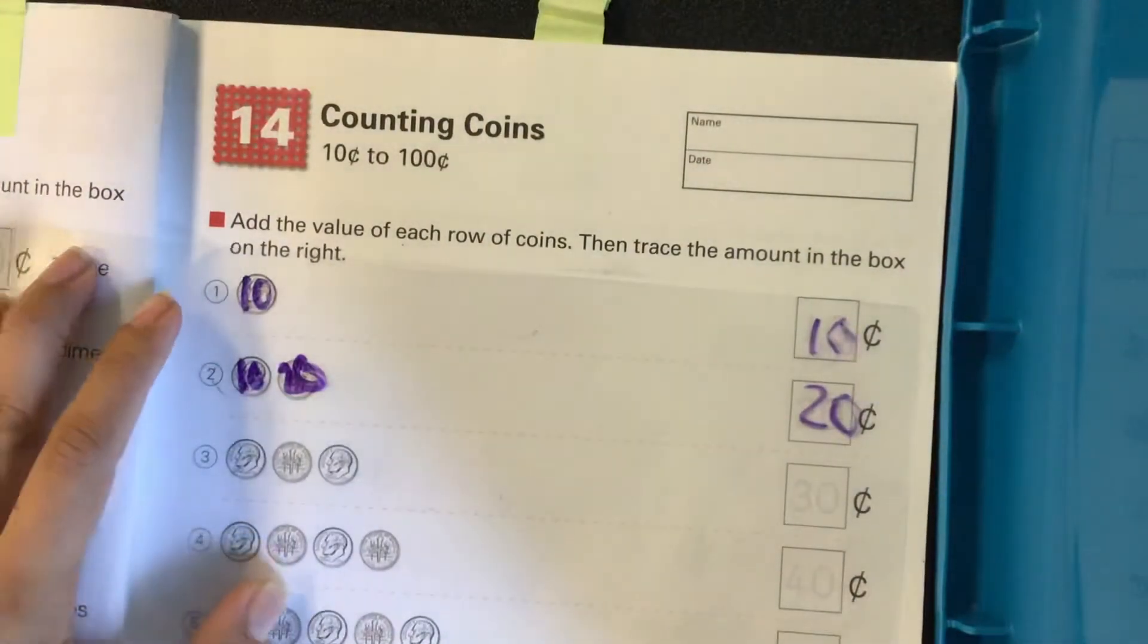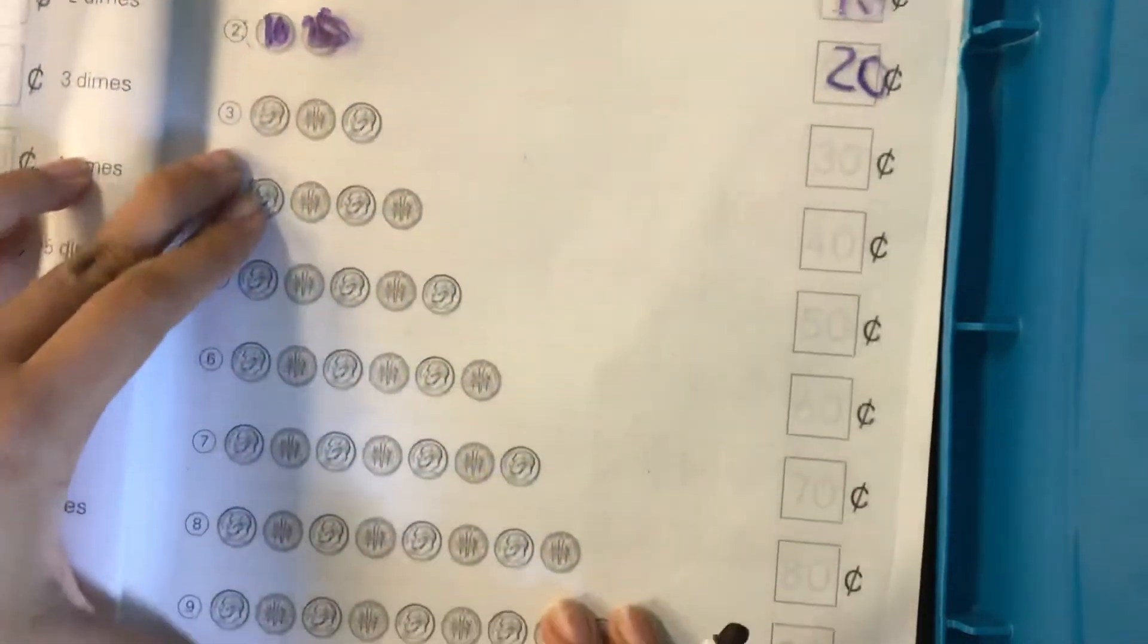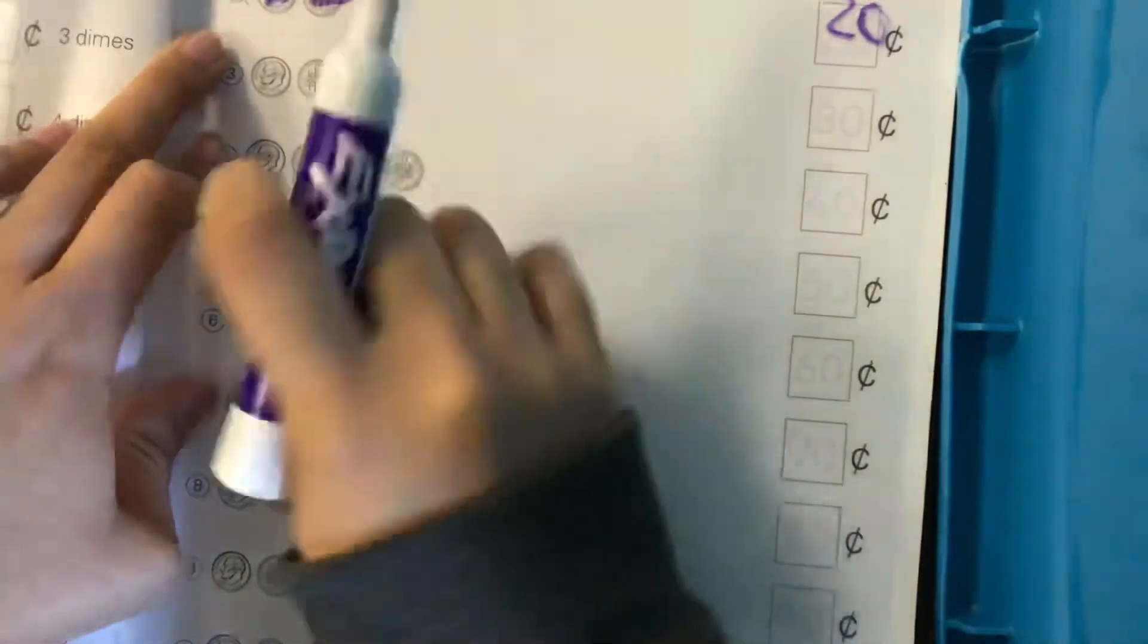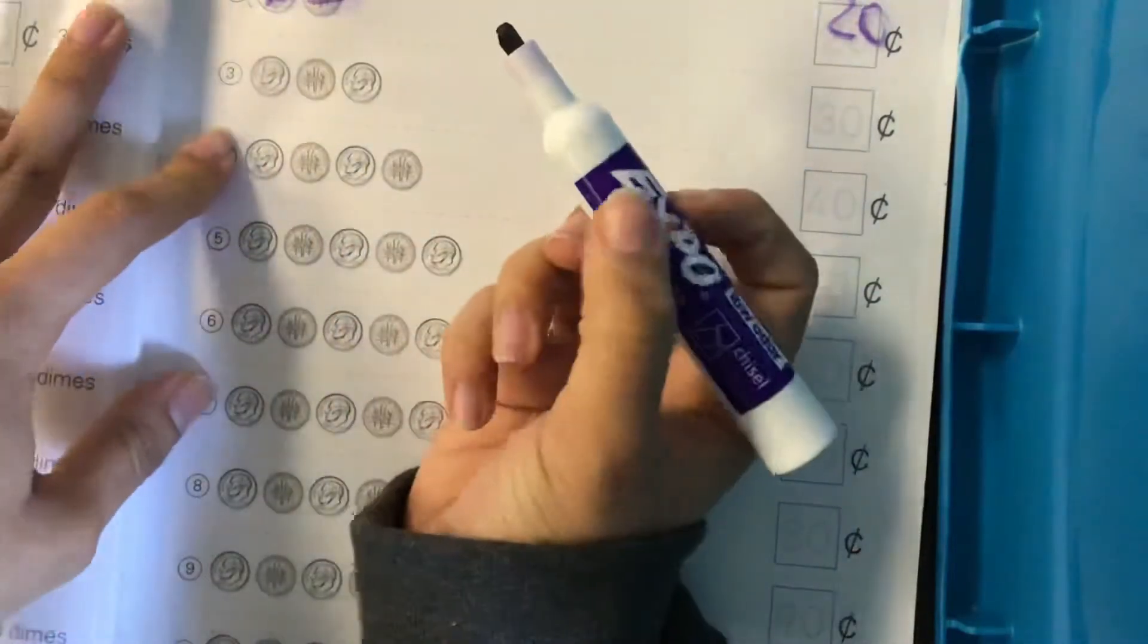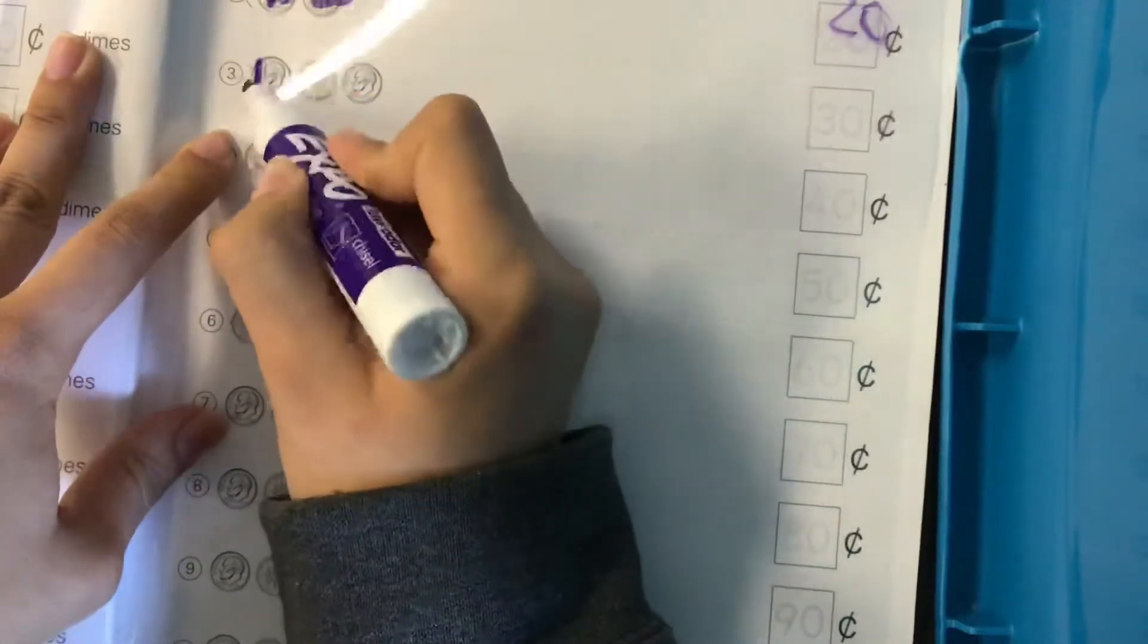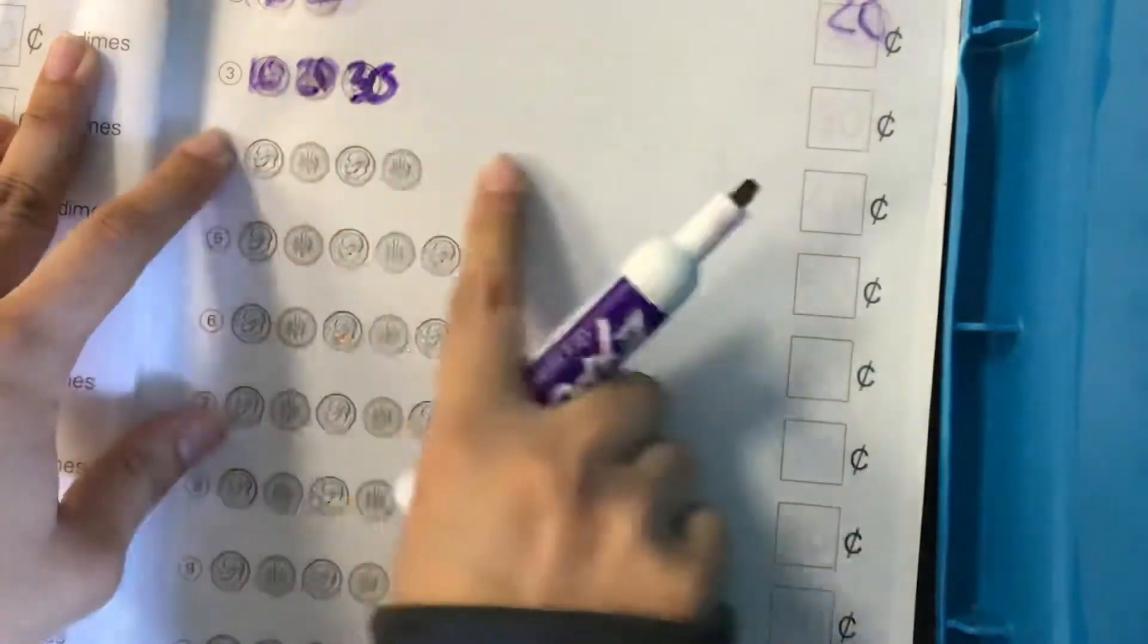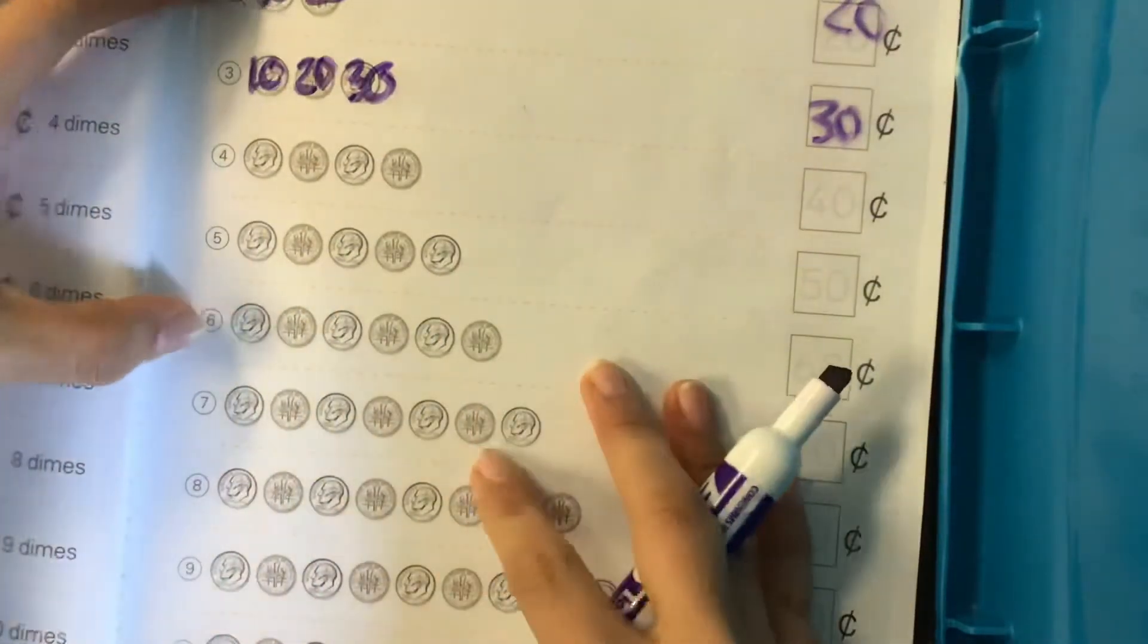So for this I'm gonna do skip counting. So I did those first two. Now let's do the next ones. We're gonna have three dimes in number three. So we're gonna skip count. See my shadow's in your way. Ten, twenty, thirty. So there are thirty cents in row three.